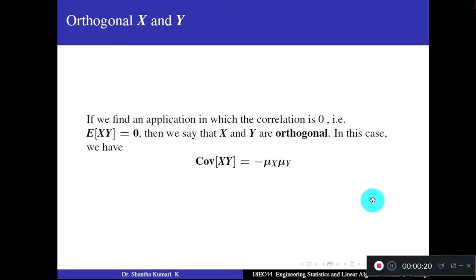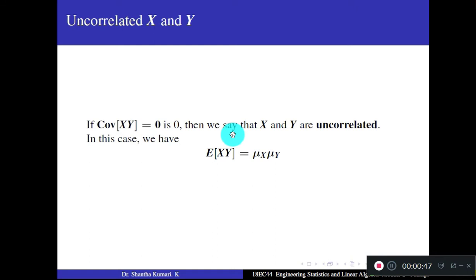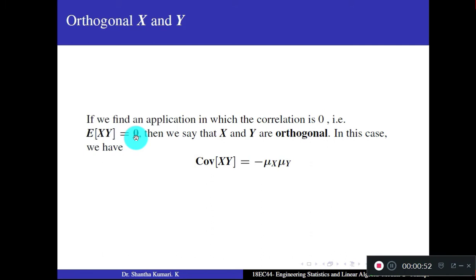Definition of orthogonal: if E[XY] = 0 — that is, if the correlation is zero — then x and y are said to be orthogonal. In that case, the covariance becomes −μ_x·μ_y. Summary: Cov(x,y) = 0 means x and y are uncorrelated; E[XY] = 0 means x and y are orthogonal.